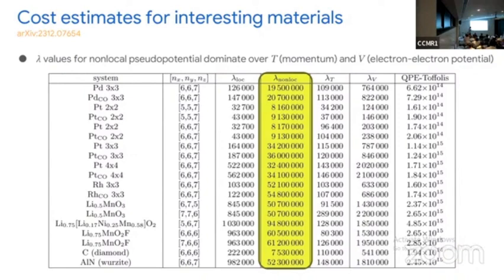Looking at the tightest possible values of lambda, if you were able to prepare the function over ν perfectly, you could maybe save a factor of 10 — but that would be a much more difficult calculation, increasing the Toffoli complexity of the block encoding as well.